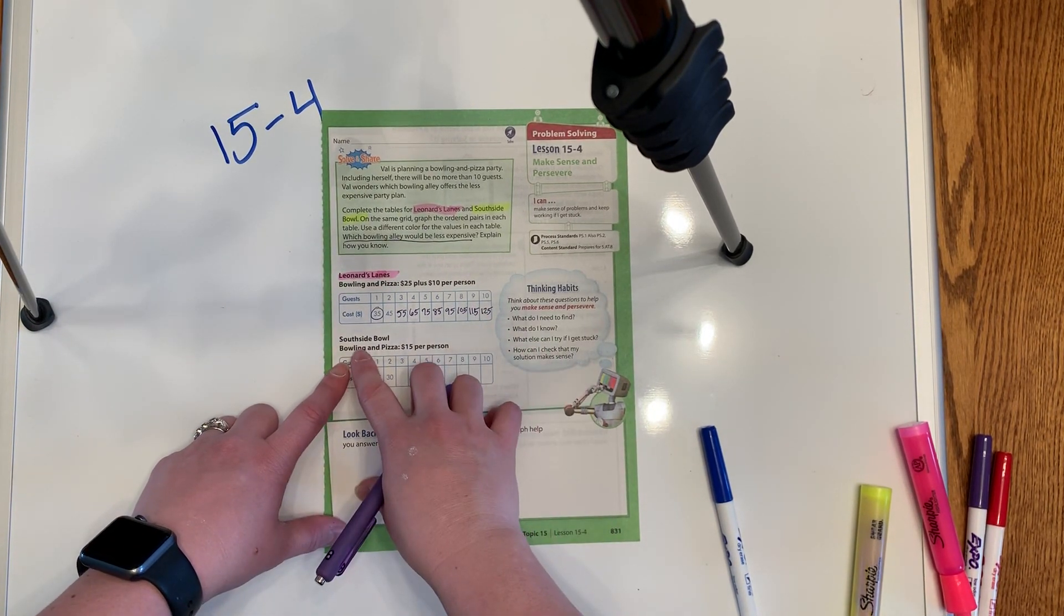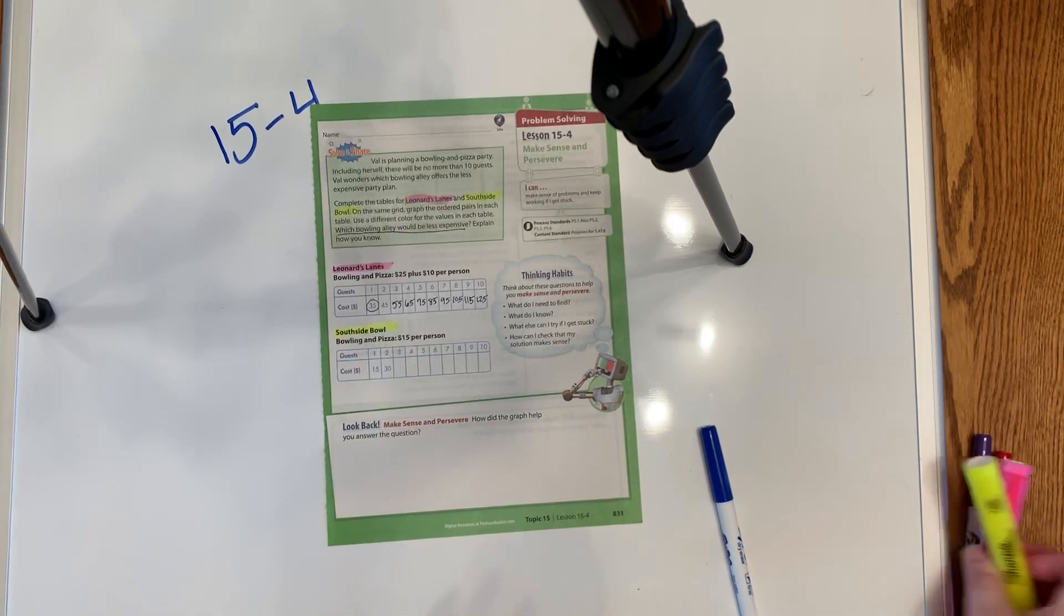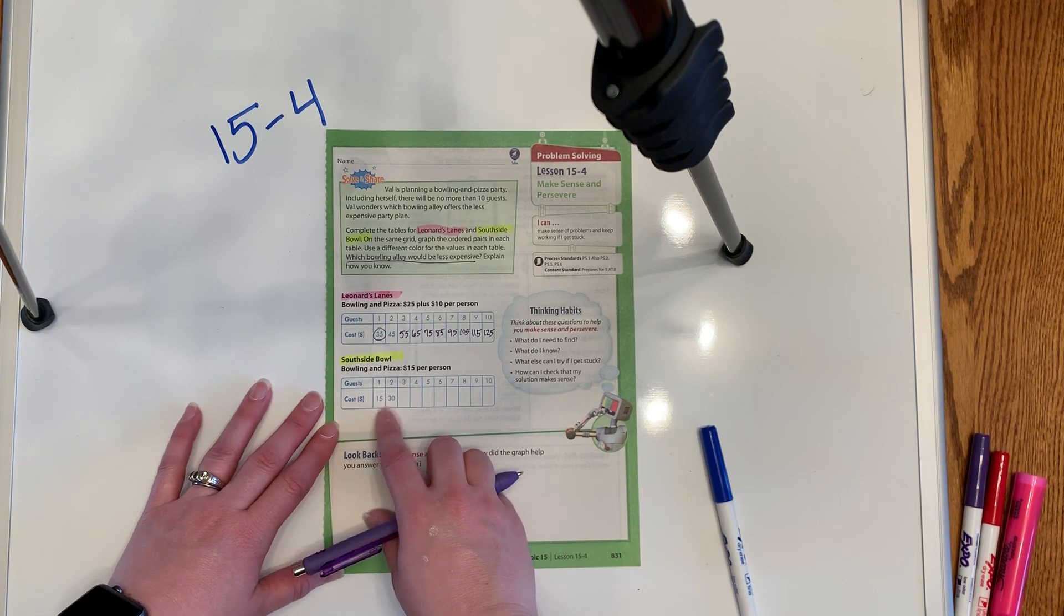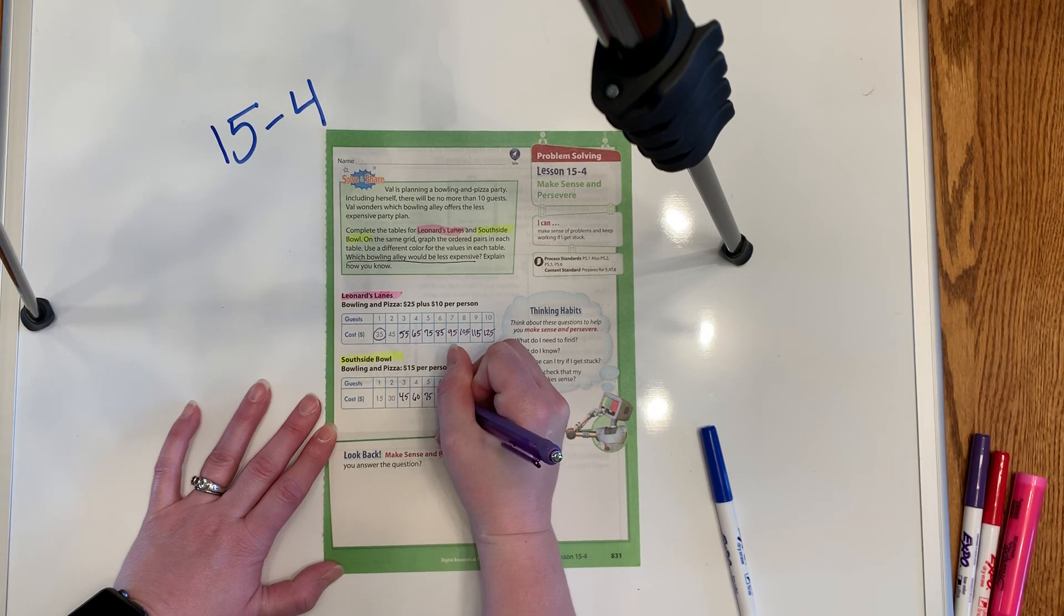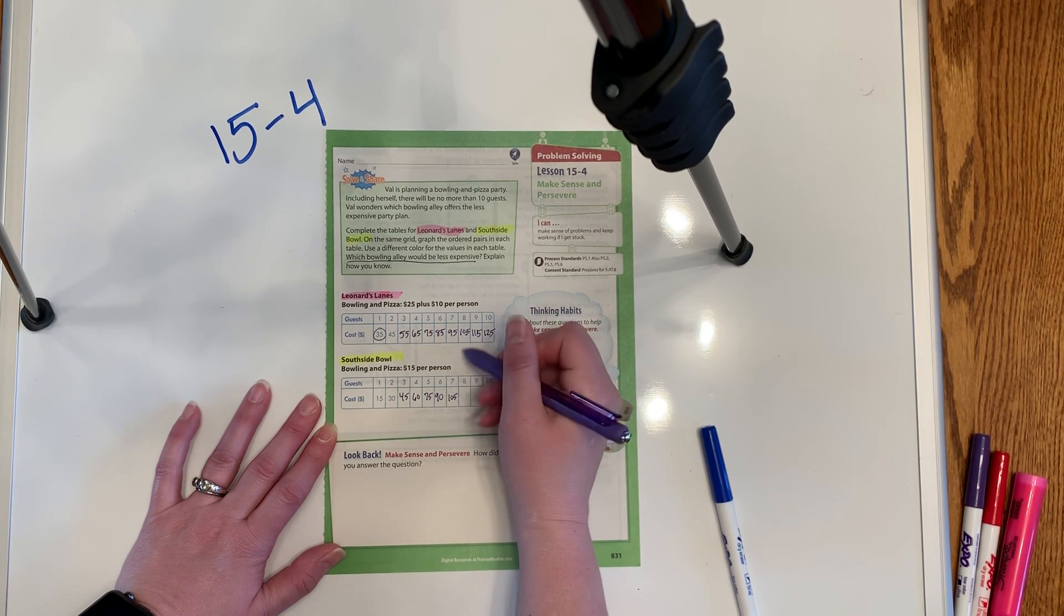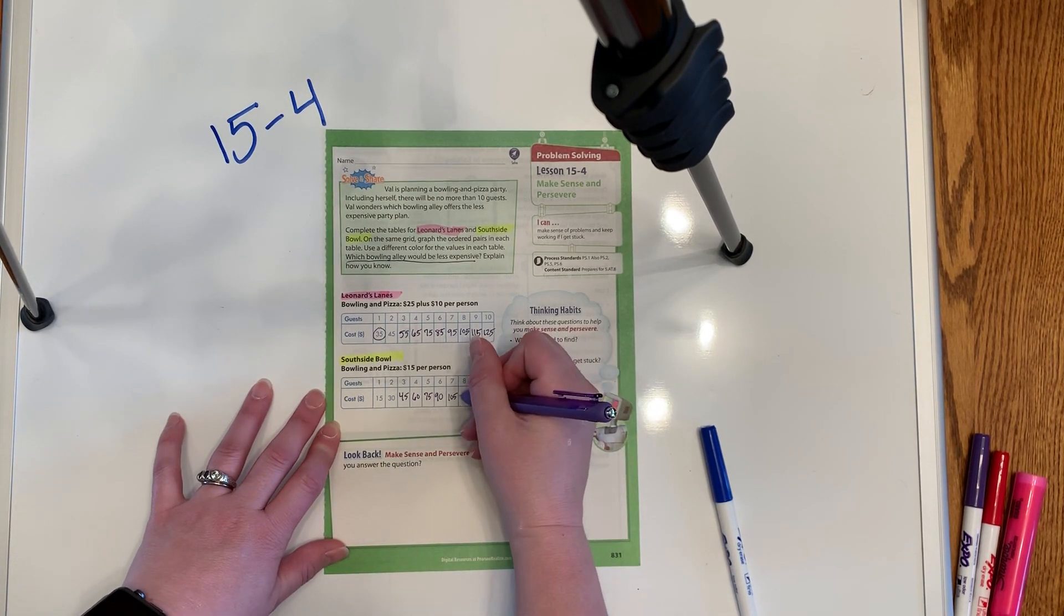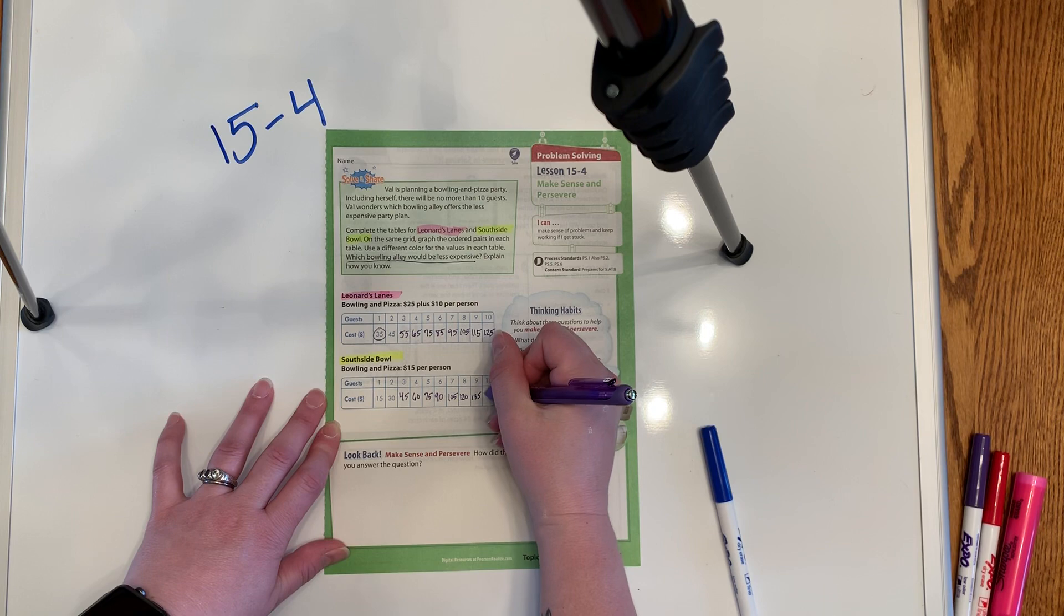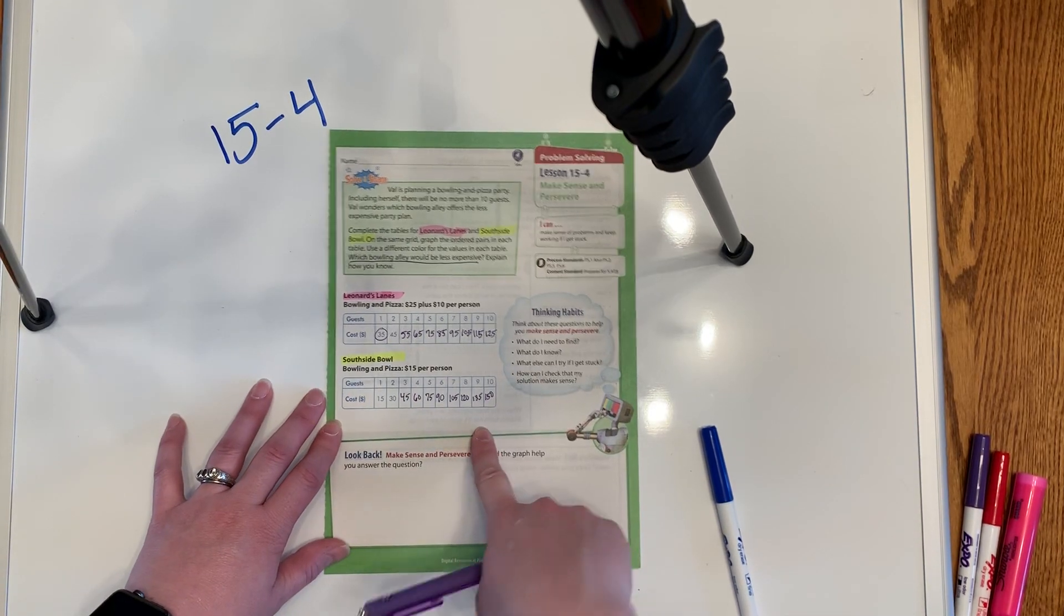And then South Side Bowl is just going to be $15 a person. So there's none of that deposit or whatever. It's just a flat rate, $15 per person. So the first person is $15, and then $30, and then $45, $60, $75, $90, $105. So at person seven, they're already at person eight. So I'm predicting right now that this one's going to be cheaper. $105, $120, $135. Yeah, it's going to actually be quite a bit cheaper. And then $135, $150. So it's going to be $25 less to do Leonard's Lanes than it is to do the South Side Bowl.